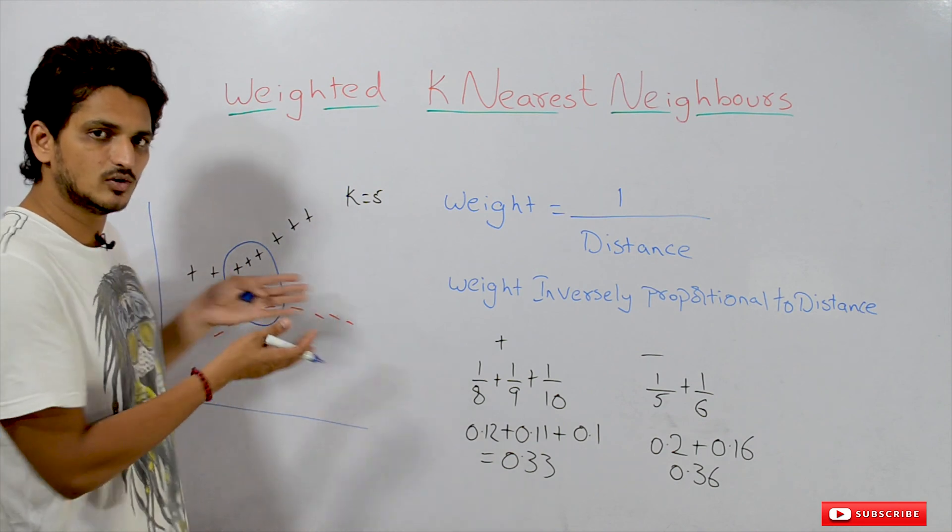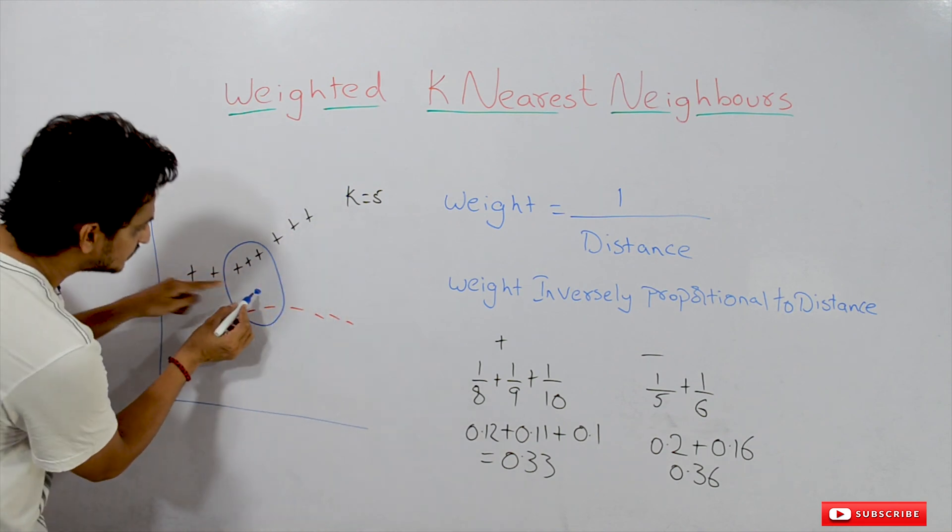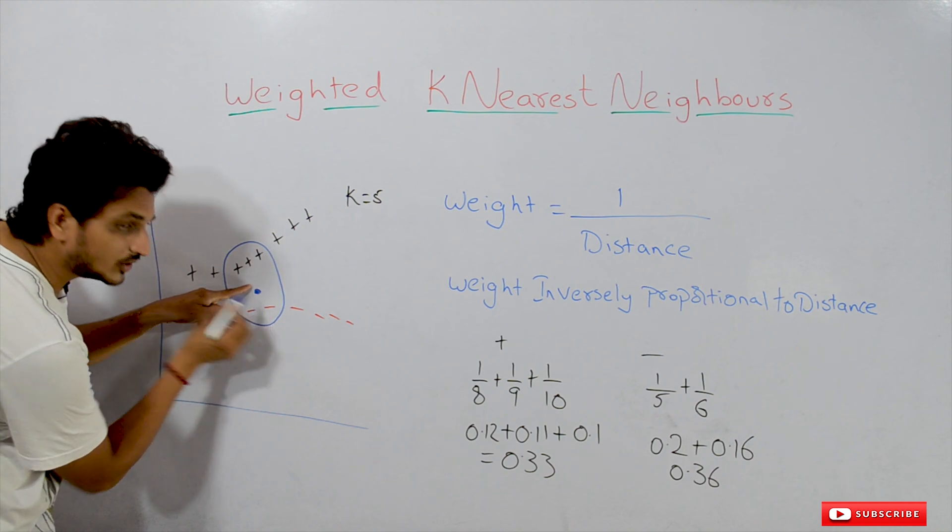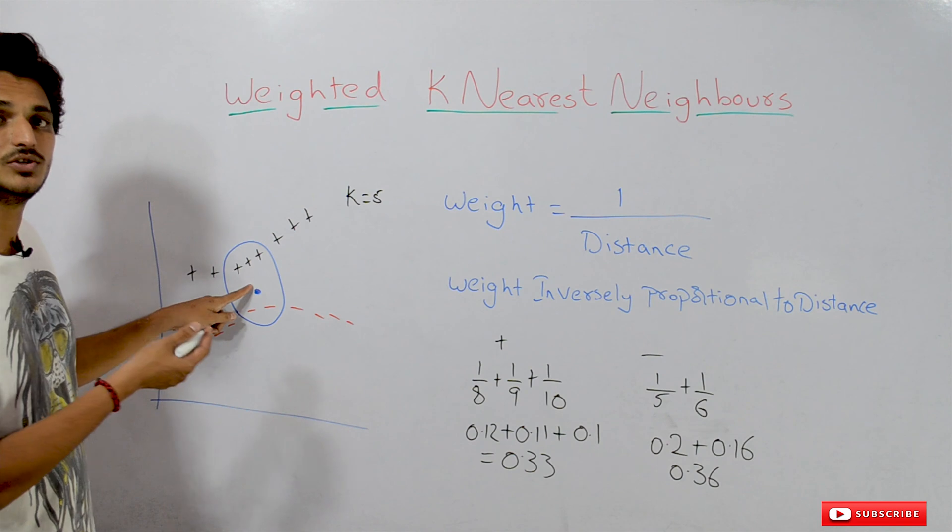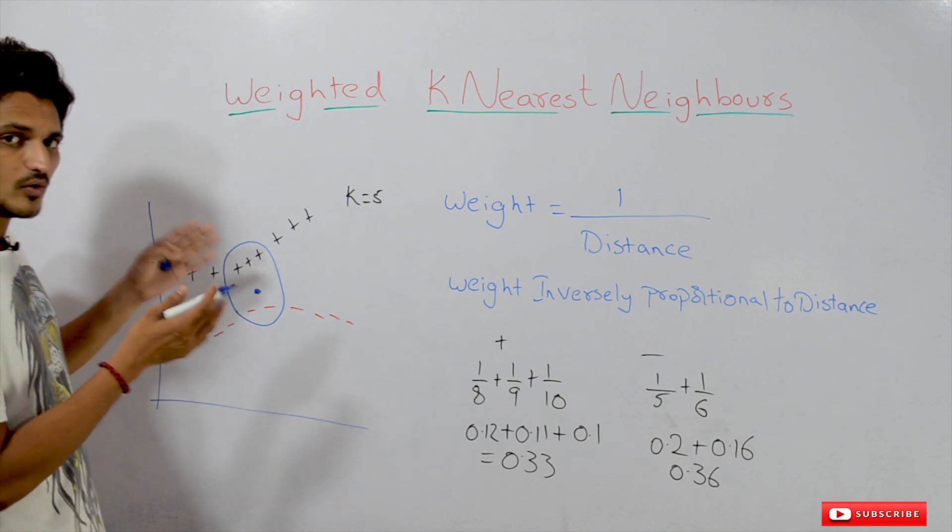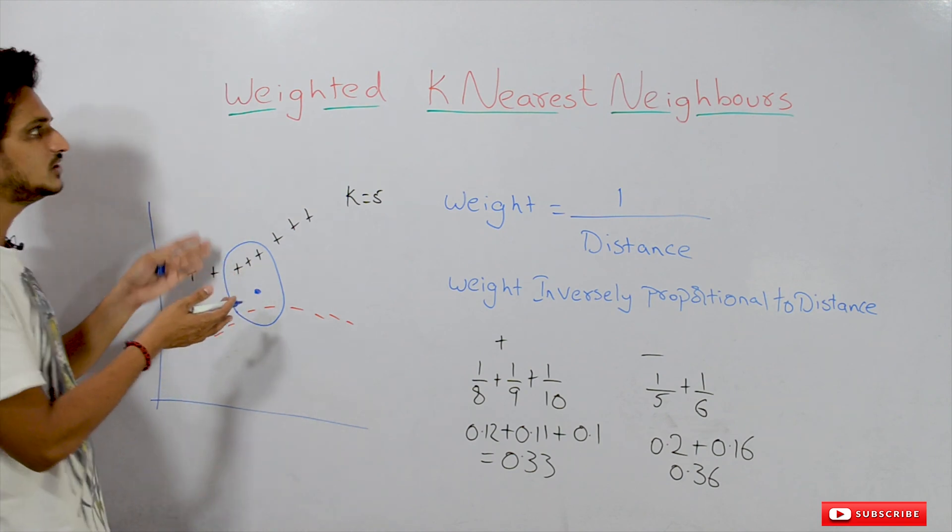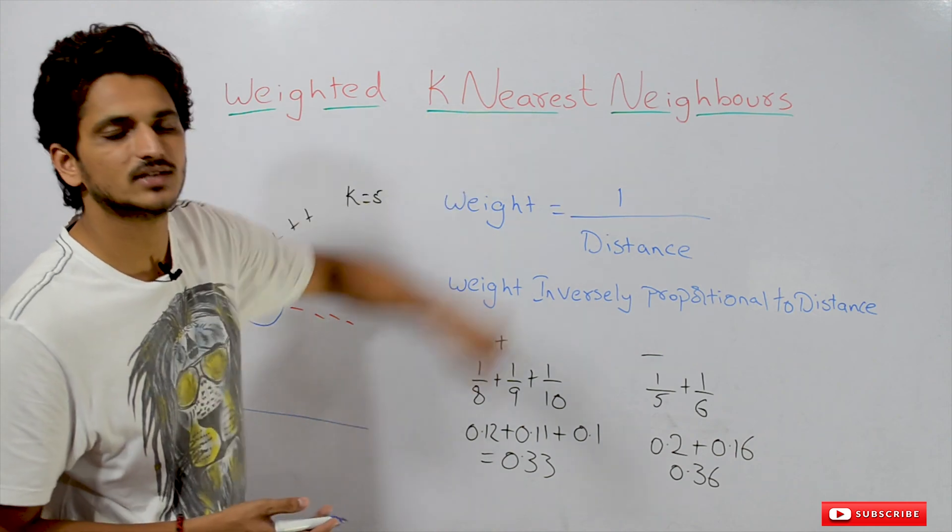But when we take a look at this data set, this point is very near to negative data points. But our model has predicted as positive. So to overcome this type of problem, we use weighted k-nearest neighbors.